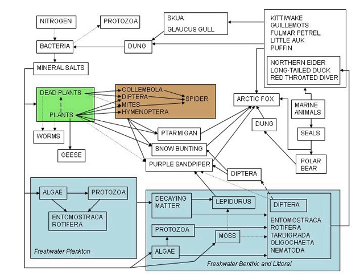Creating a cellular model has been a particularly challenging task of systems biology and mathematical biology. It involves the use of computer simulations of the many cellular subsystems such as the networks of metabolites and enzymes which comprise metabolism, signal transduction pathways and gene regulatory networks to both analyze and visualize the complex connections of these cellular processes. The complex network of biochemical reactions, transport processes and their spatial organization make the development of a predictive model of a living cell a grand challenge for the 21st century, listed as such by the National Science Foundation (NSF).